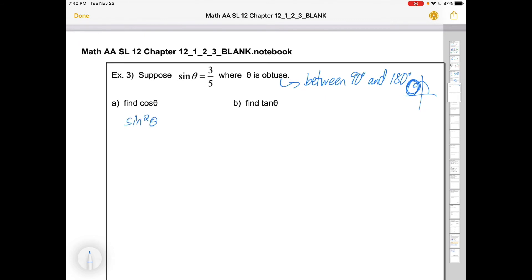Sine squared theta plus cos squared theta equals one. This is in your formula booklet. That means that three fifths squared plus cos squared theta is going to be equal to one.